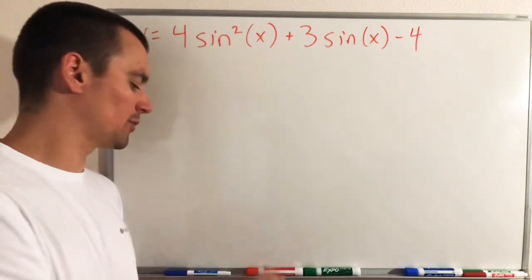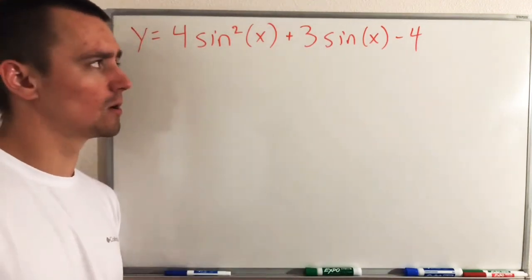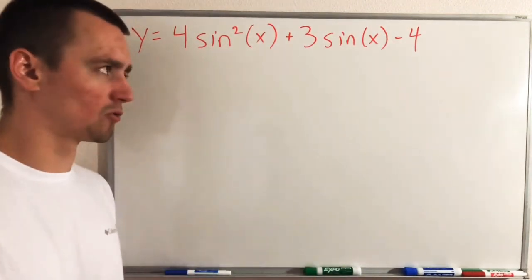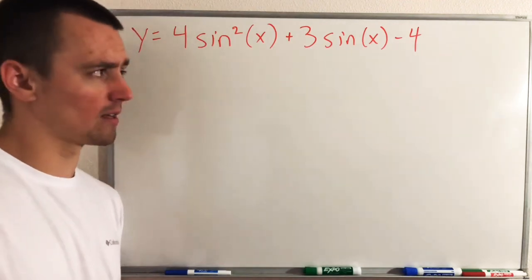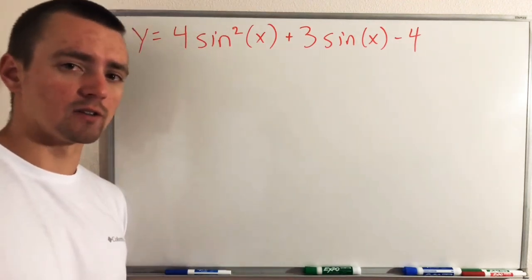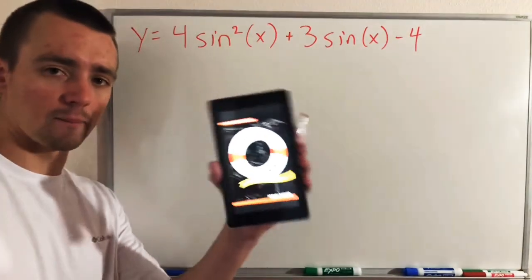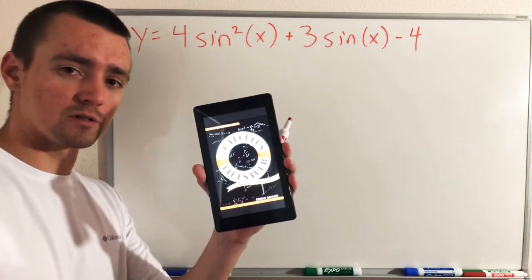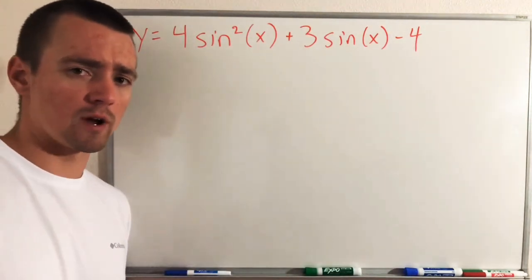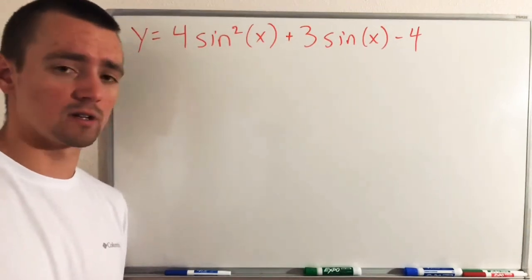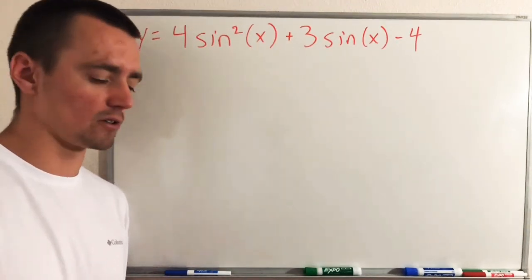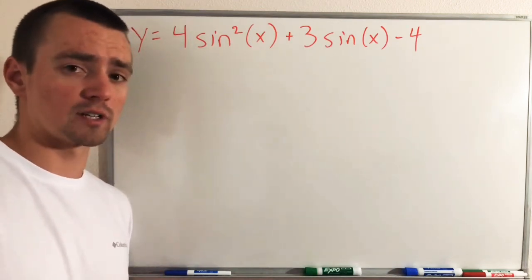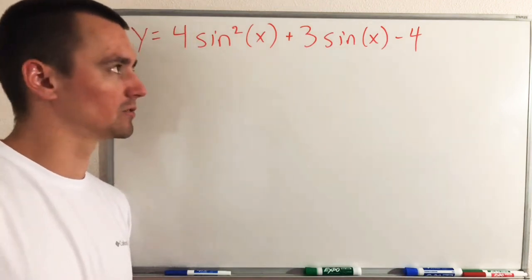We're going to start with this example here which I talked about at the end of that last video: find the derivative of 4 sine squared x plus 3 sine x minus 4. As discussed at the end of that last video and in The Calculus Lifesaver by Adrian Banner — you can find that book on Amazon, linked in the description — you can get it in ebook or paperback for less than $20. It's a great resource for learning calculus in an intuitive way.